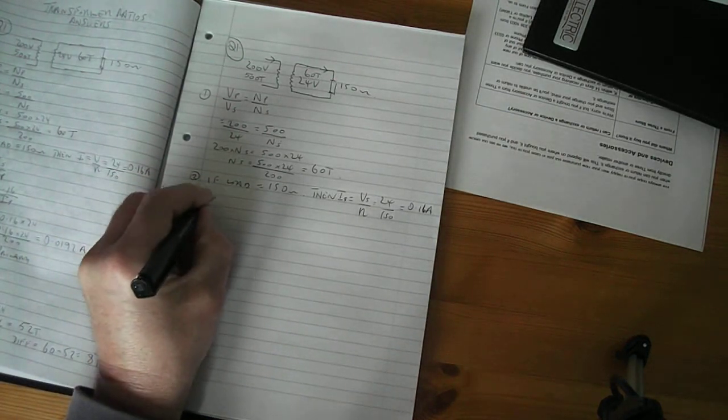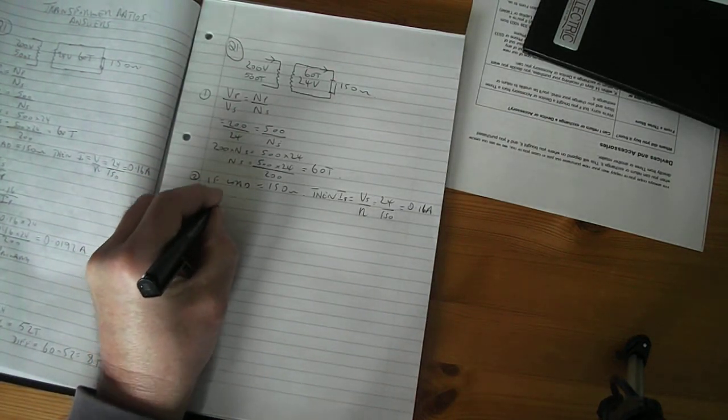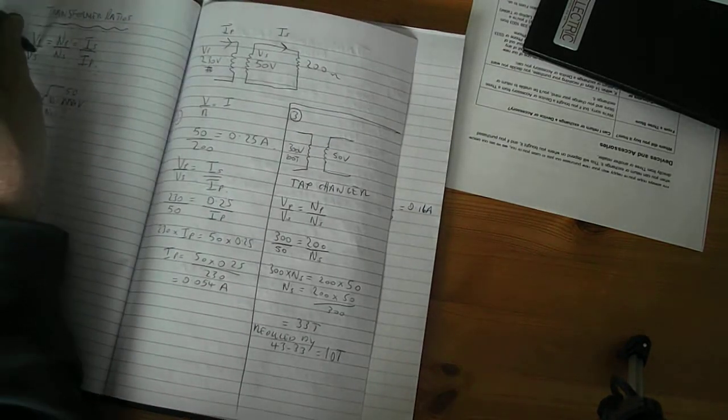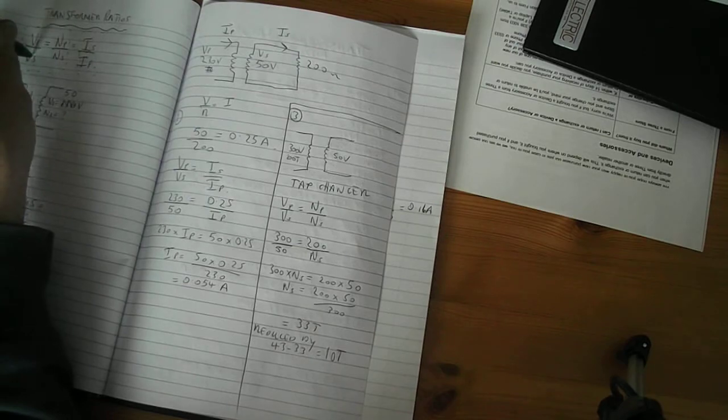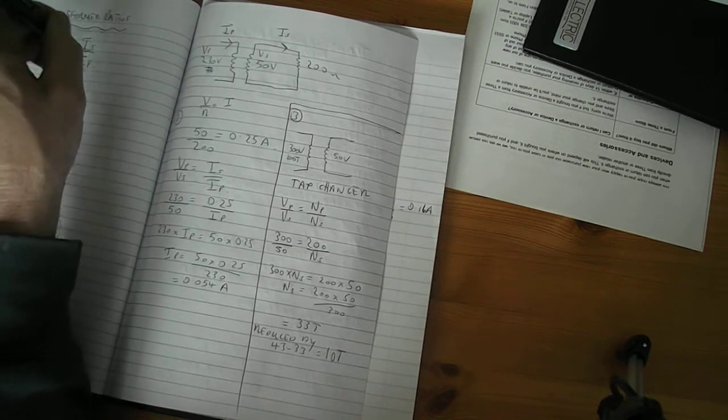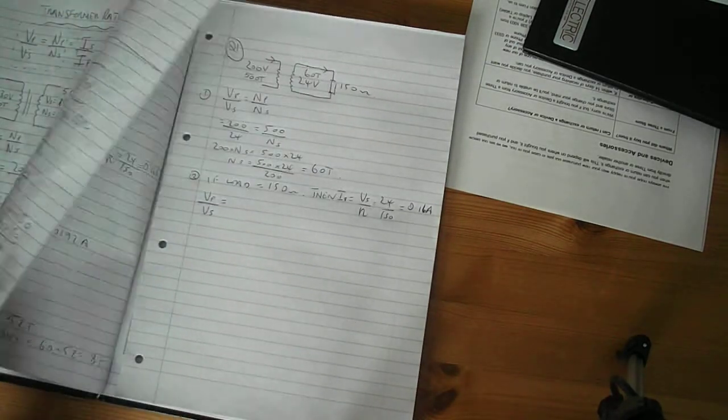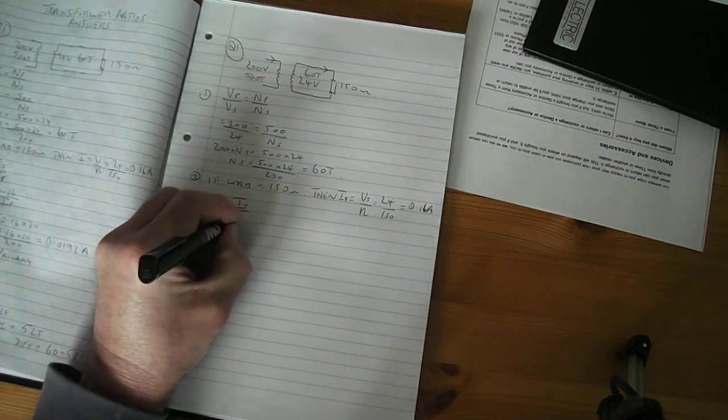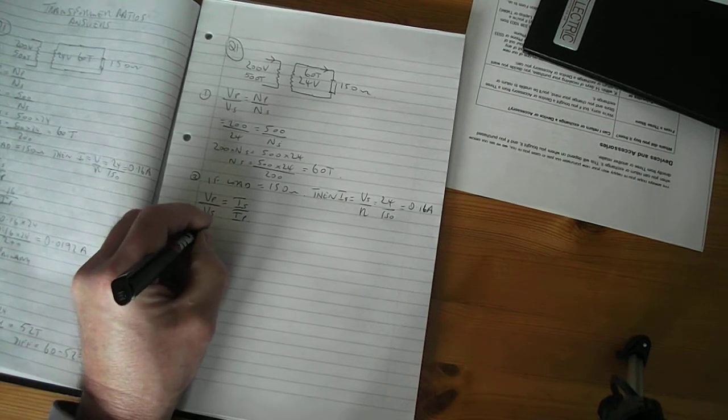So your new formula now, you know V primary over V secondary, now we're looking for current, so we're going to use this and this. So V primary and V secondary, I secondary, I primary, because we're looking for currents. So I secondary on the top, I primary on the bottom, substitute the figures.